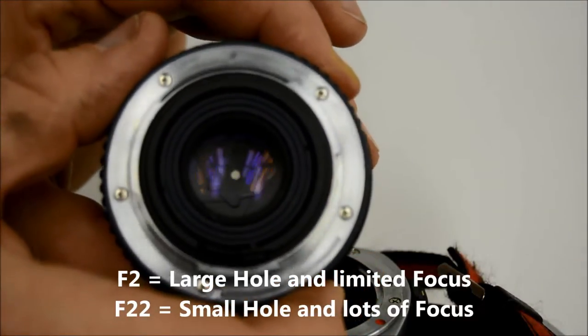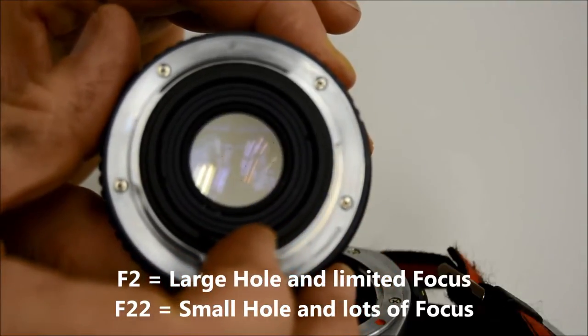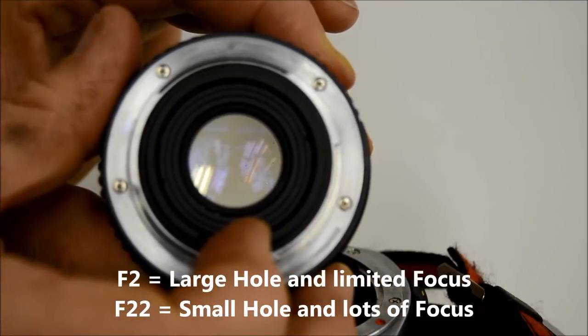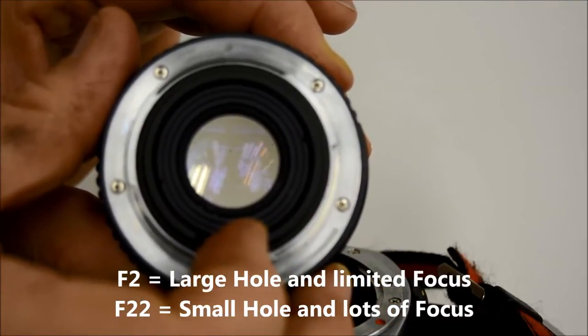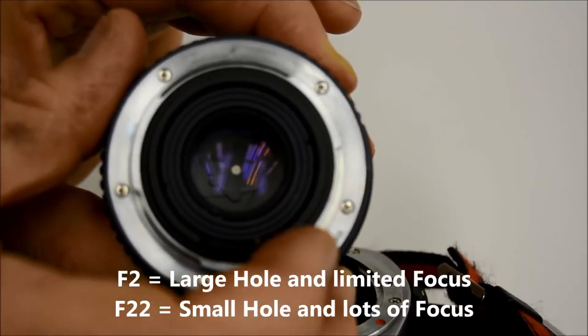The only catch is when you look through your camera, you never get to see this, because the camera, when you mount the lens, opens as wide open, and only when it takes the photo releases it, and right after it opens it up again. So you only ever see what is at f2, or at the brightest part of the lens, you never see this dark part.